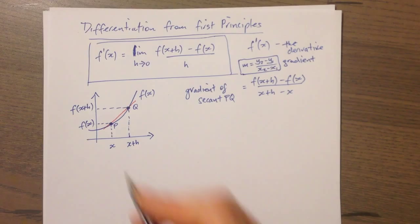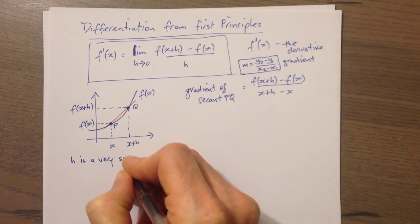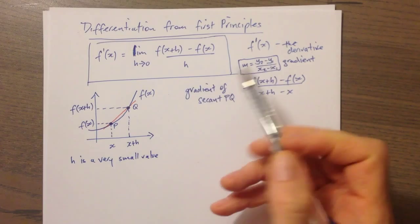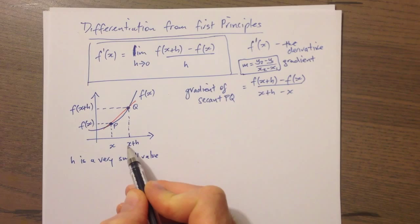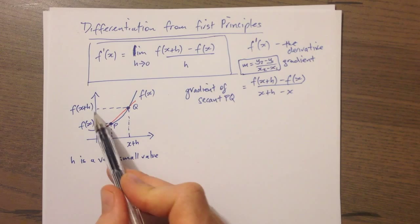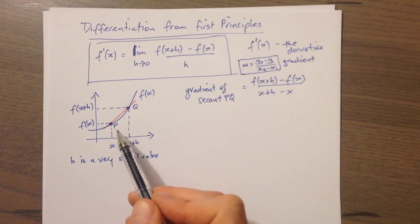Let's come back to our picture for a second. We used h — the idea is that h is a very small value. We imagine that the points P and Q are really close to each other, in fact so close that they're almost the same point. So h is really close to zero, x is almost the same as x plus h, and in turn these y values — f of x and f of x plus h — may also be quite close.